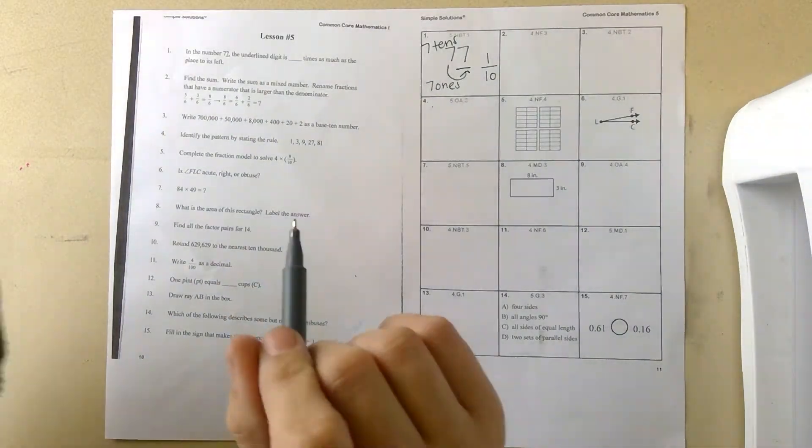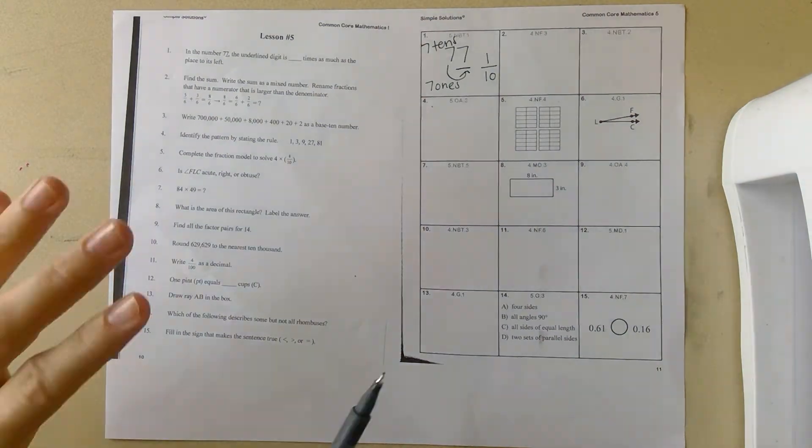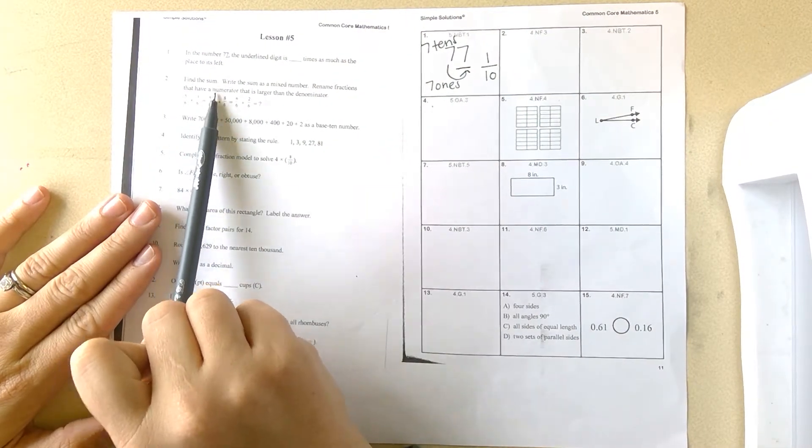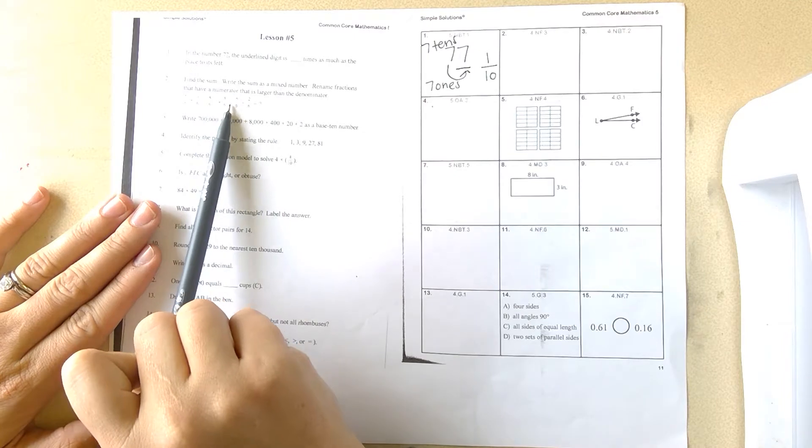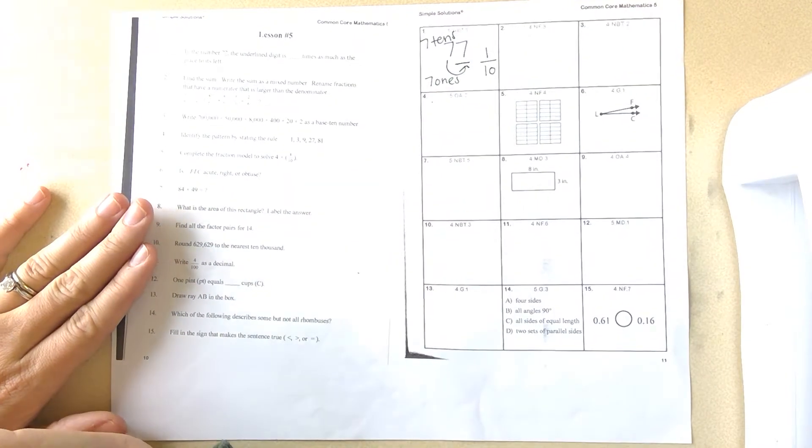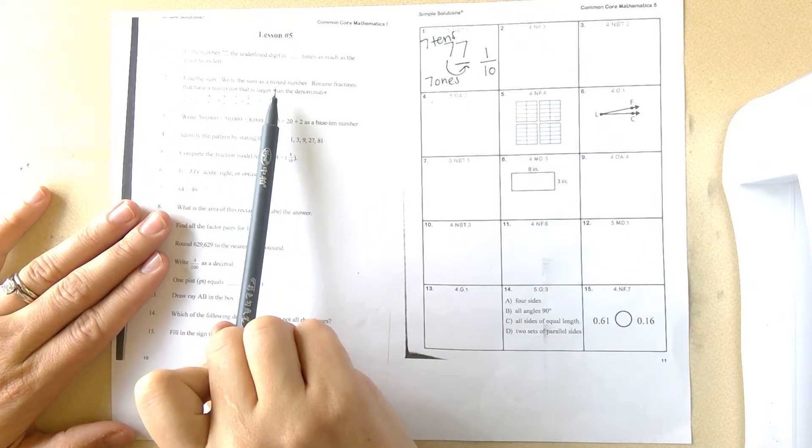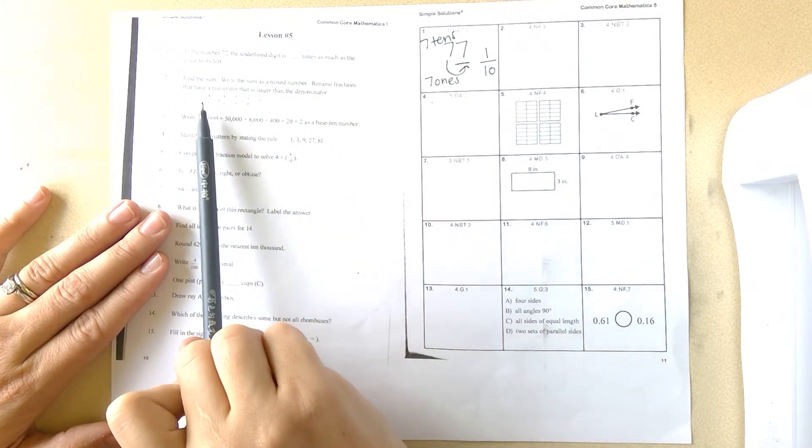Number two: find the sum, write the sum as a mixed number. Rename your fractions that have a numerator that is larger than the denominator. They have five-sixths plus three-sixths is eight-sixths. Eight-sixths equals six-sixths plus two-sixths. So rename the fractions that have a numerator larger than the denominator—that would be eight-sixths.